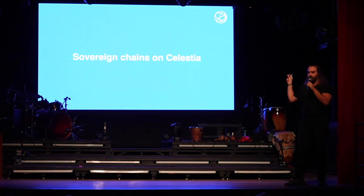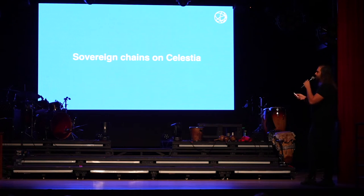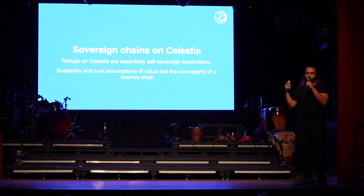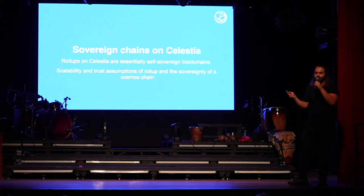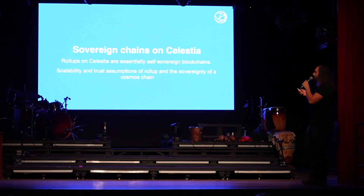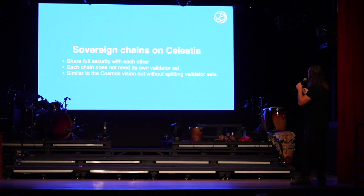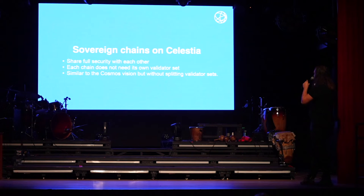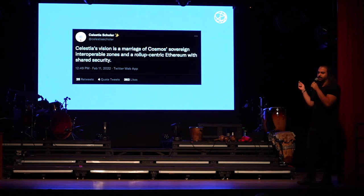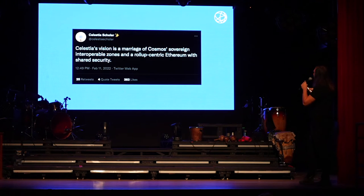Now let's talk about the architecture of sovereign blockchains and their security properties. We have a concept called sovereign rollups on Celestia. You can deploy a sovereign rollup, allow it to connect to the Celestia data availability layer, and you have a shared security model because it's more scalable - the trust assumptions of a rollup are provided by data availability sampling. Sovereign chains share full security with each other, a property we get from the data availability layer. Each chain does not need its own validator set. Sovereign chains can become sequencers - it's similar to Cosmos, but you don't need multiple validator sets per zone. Celestia's vision is a merger of the Cosmos sovereign interoperable zones and a rollup-centric Ethereum which shares security.